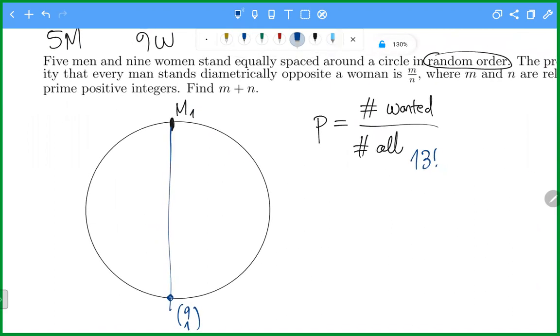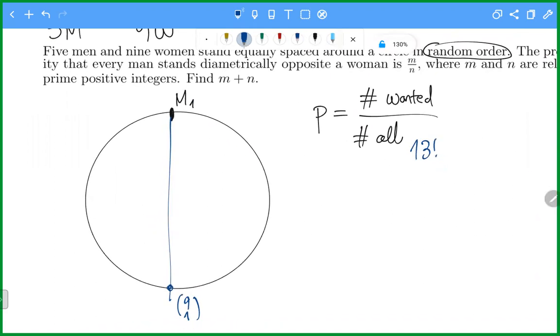Now we have 12 people. So let's group them so that each group has people diametrically opposite to one another. Maybe I should use this different color.